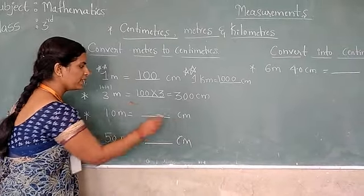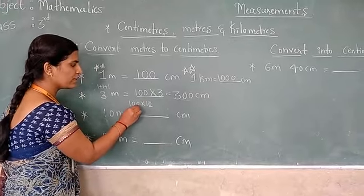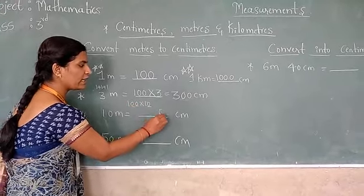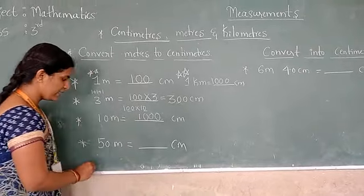10 meters equals how many centimeters? 100 multiplied by 10, you have to do. Here comes zero, here comes zero. Write three zeros properly first. One comes up, one. It will become 1000 centimeters.